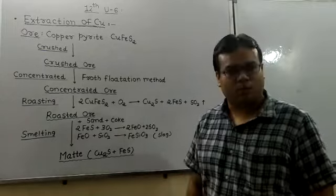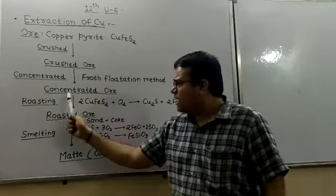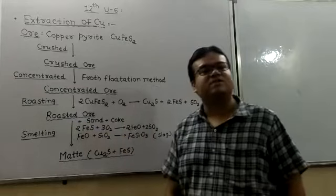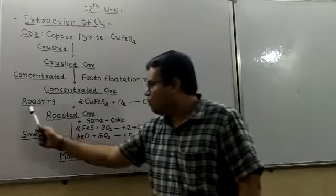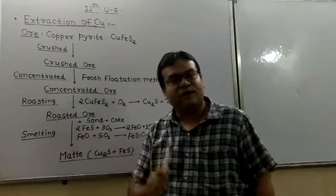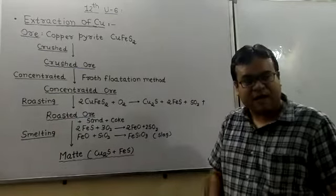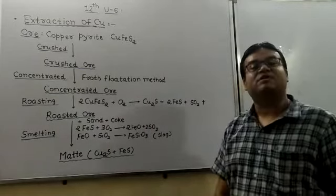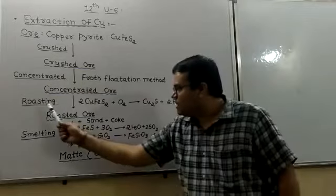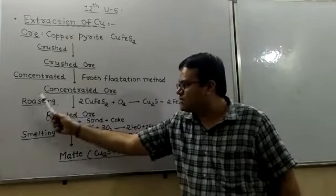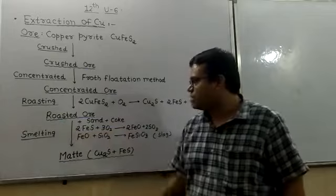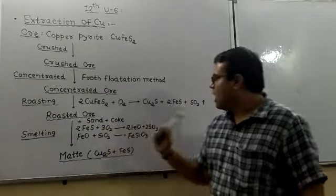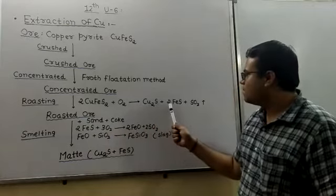Then after we have concentrated ore, we know that to convert it to its oxide form, if it is sulfide ore we require roasting process. For roasting, we have to heat it at high temperature in presence of oxygen. When this concentrated ore is involved in roasting reaction: 2CuFeS2 + O2 gives cuprous sulfide plus FeS and SO2 gas is released.